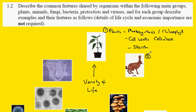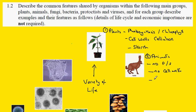Contrast this to group number two, the animals, where we have no photosynthesis. There are no cell walls and carbohydrate is stored as a molecule called glycogen. Typically these animals are what we would call consumers, eating other organisms as a source of nutrient.